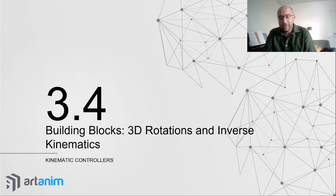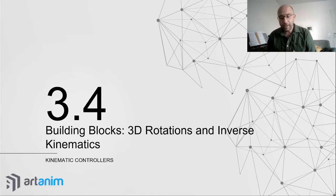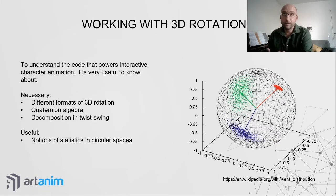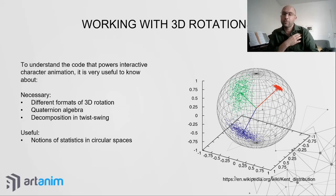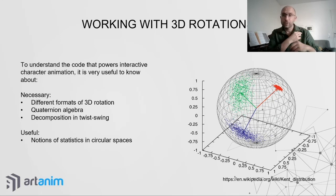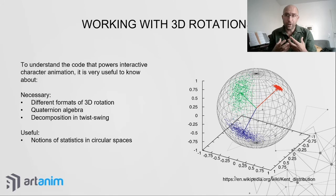Now you have a basic idea of kinematic controllers — state machines and motion matching. To build your own physics-based character animation, you should also be comfortable with how character animations are defined. Poses are combinations of articulations, each having a 3D rotation. A character pose is defined as a combination of these 3D rotations.